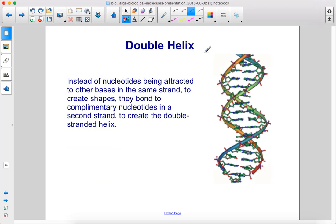Instead of nucleotides being attracted to other bases in the same strand to create shapes, they bond to complementary nucleotides in a second strand to create the double-stranded helix.